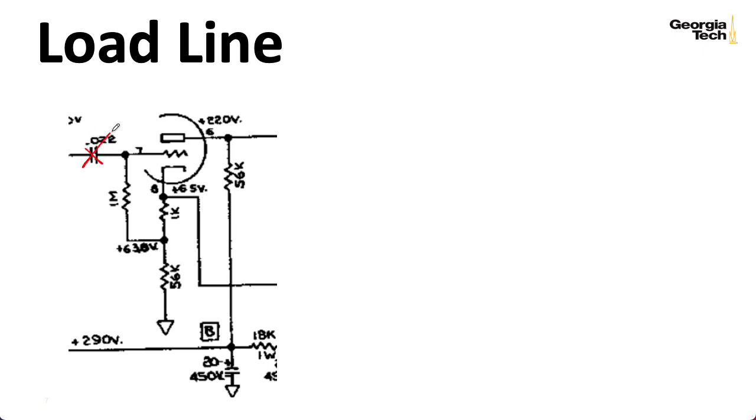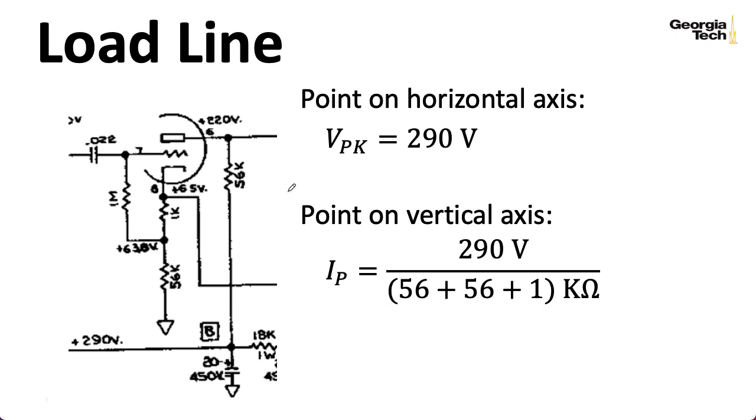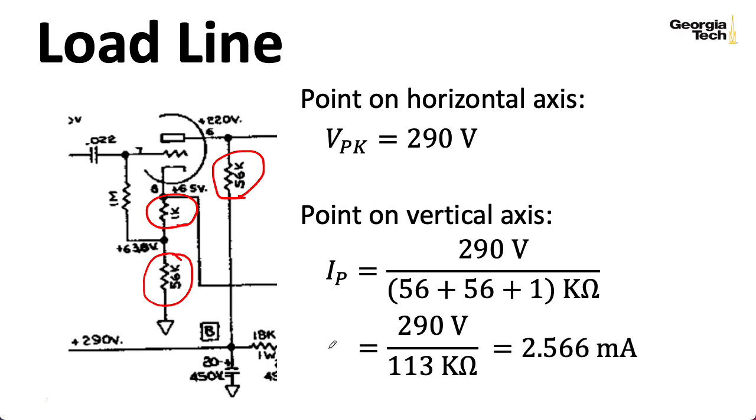Okay, so what's the first thing we do when we analyze a circuit like this? We plot a load line. Remember that at DC, this capacitor acts as an open circuit. We're assuming no current is flowing through the grid. So there's no current flowing through this one megaohm resistor. So all of the current is flowing through these resistors and the triode. So at one extreme, we can assume that all of the voltage is dropping across the triode, and that's the zero current case. At the other extreme, we can assume that none of the voltage is dropping across the triode, and that all of it is dropping over the resistors. So I would compute a current of 290 volts divided by the sum of the 56k down here, the 56k over here, and this 1k resistor, giving me 290 volts over 113 kiloohms, or 2.566 milliamps.